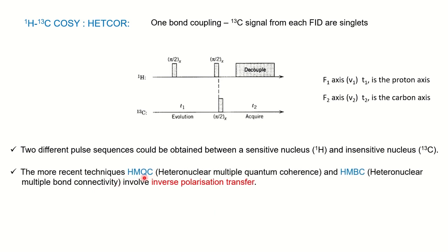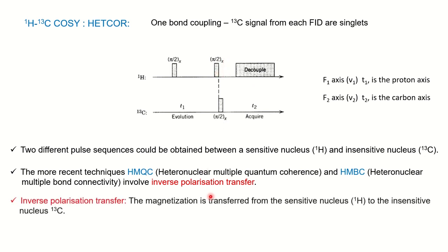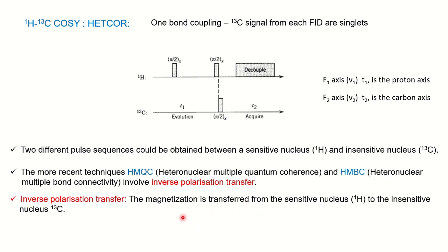The more recent techniques are HMQC — Heteronuclear Multiple Quantum Coherence — and HMBC — Heteronuclear Multiple Bond Connectivity. These involve inverse polarization transfer, meaning the magnetization is transferred from the sensitive nucleus (proton) to C13, which is insensitive — so inverse means from sensitive to insensitive. This is also called inverse coupling and gated decoupling; both techniques come under these same terms.